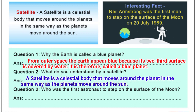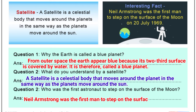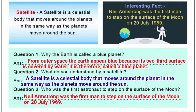Last question: Who was the first astronaut to step on the surface of the Moon? Answer: Neil Armstrong was the first astronaut to step on the Moon on 20 July 1969. This worksheet is now complete. If this video is helpful, please like and share, and don't forget to subscribe to our channel, Knowledge Kingdom.